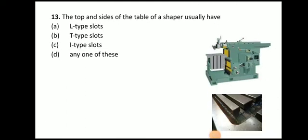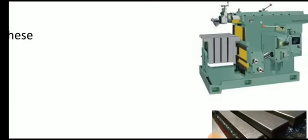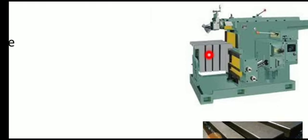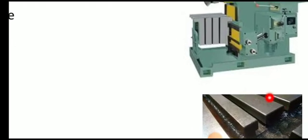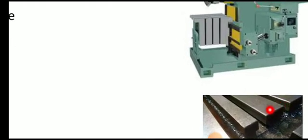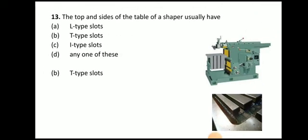Next question: the top and sides of the table of a shaper usually have T-type slots. Here you can see the slots provided on the side and on the top. The T-type slots are provided on the sides and the top of the table of a shaper machine.